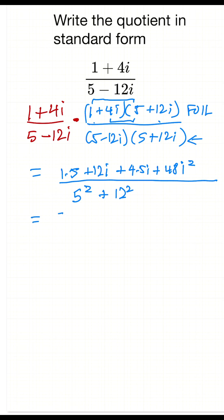So 5 times 1 is 5, we've got 12i plus 4 times 5 is 20i. And then we know here i squared is just minus 1, so that's minus 48. 5 squared is 25, 12 squared is 144.